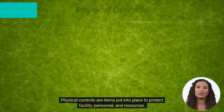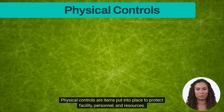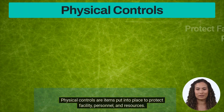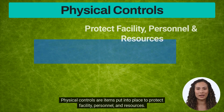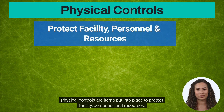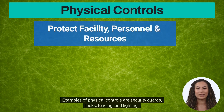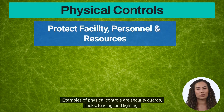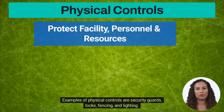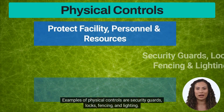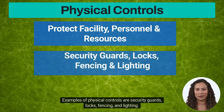Physical controls are items put into place to protect facility, personnel, and resources. Examples of physical controls are security guards, locks, fencing, and lighting.